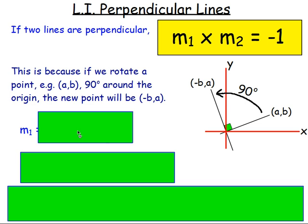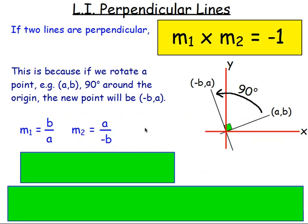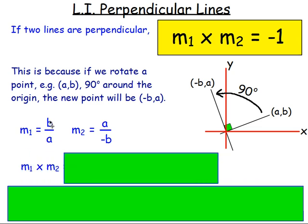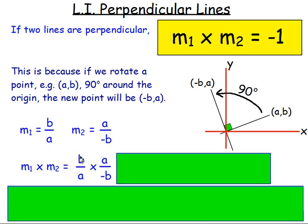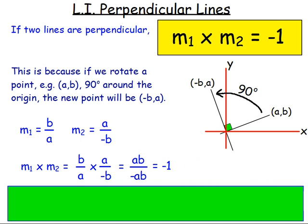If you think about it then, the gradient of the first line — which has the point A, B on the end — is vertical over horizontal, so that's B over A. The gradient of the second line is again vertical over horizontal, giving A over negative B. If you multiply them together: gradient one times gradient two equals B over A times A over negative B. Multiply the numerators and denominators: you get AB over negative AB. AB and AB cancel out, leaving one over negative one, which is just negative one. That's where it comes from.